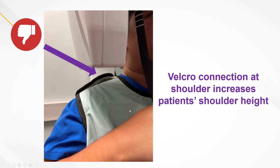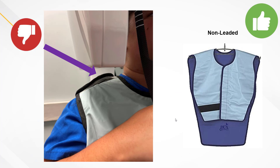Here's something you definitely want to consider. Those lead aprons that have the junction or connection point at the shoulders — you can see in this example we're losing roughly an inch of clearance space for the machine to rotate around. That could mean a lot, so be conscious of that. Double-check what you're using in the practice. A much better option, in my opinion, is to use a non-leaded apron. Number one, it's a lot lighter for your patients. And number two, it connects in the front using Velcro and sits flatter on the patient's shoulders, giving you as much clearance as possible. All these little tips are even more important when it comes to your necklace patients — meaning patients with no neck.